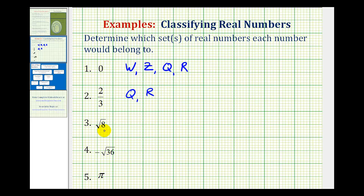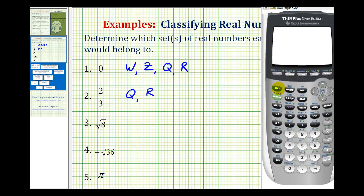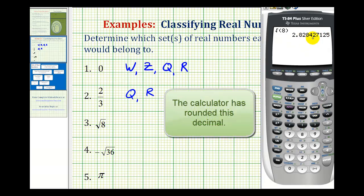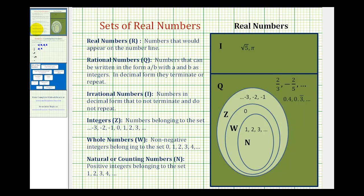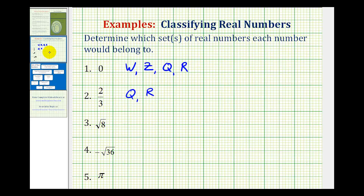Next, we have the square root of eight. Let's go ahead and convert this to a decimal. The square root of eight gives us a non-terminating, non-repeating decimal. Looking at our Venn diagram, since it's a non-repeating, non-terminating decimal, it belongs to the set of irrational numbers — in decimal form it does not terminate and does not repeat. And all irrational numbers are also real. So the square root of eight is irrational and real.